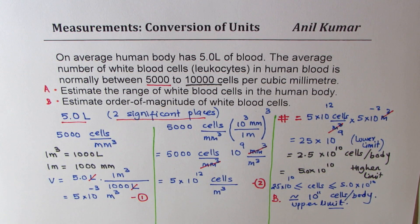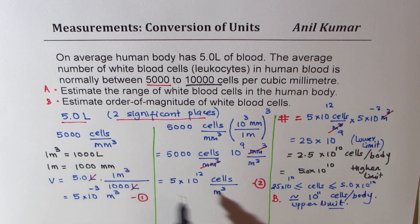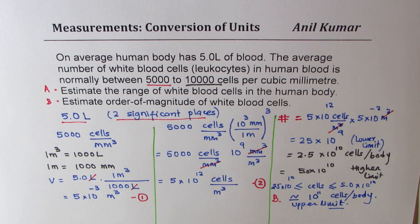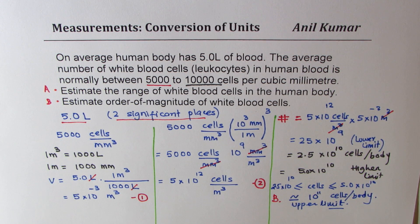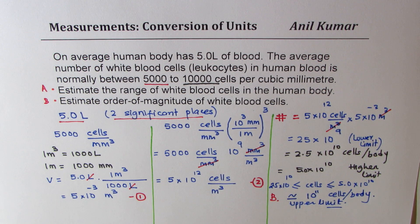To recap: what we really did here was match the units, getting everything into meters and cubic meters. Then we multiplied the amount of blood by the density of cells to get the total number of cells in the body. Feel free to write your comments and share your views. If you like and subscribe to my videos, that would be great. Thanks for watching and all the best.